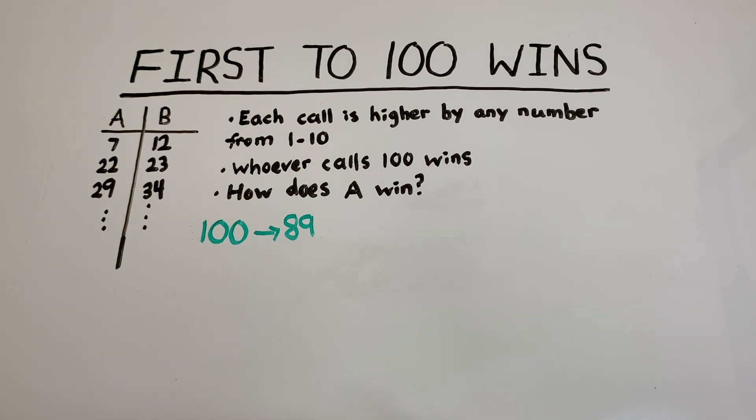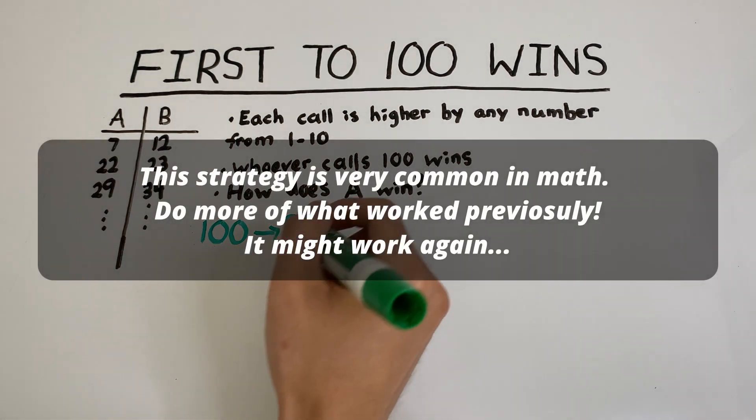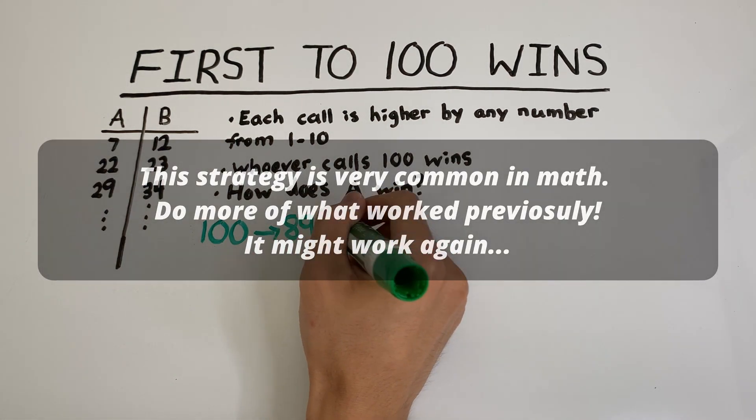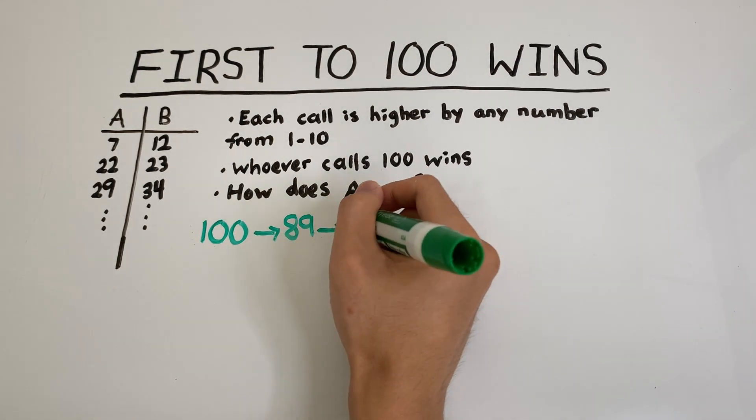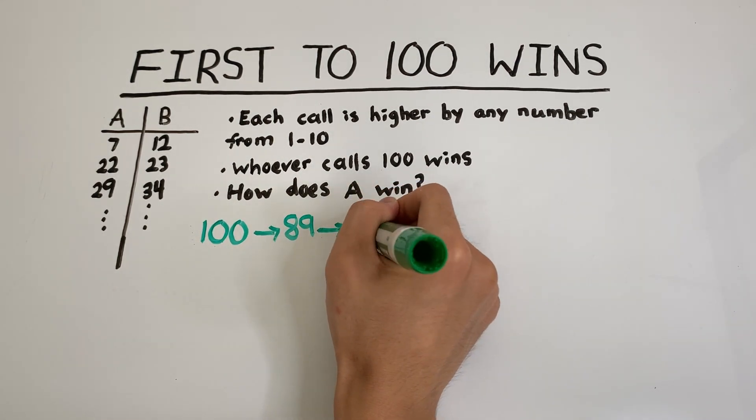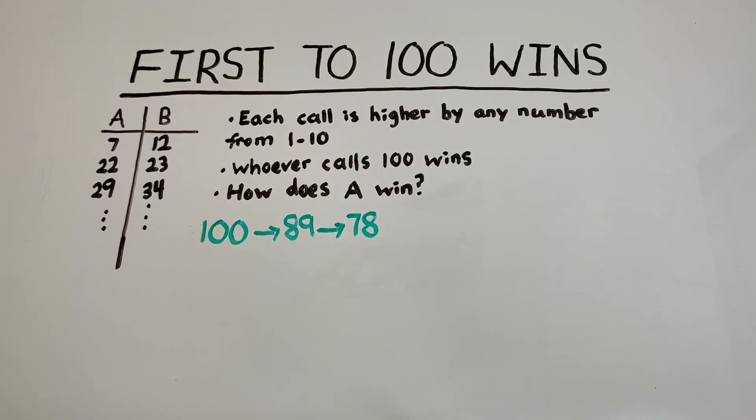So if we know A has to call 89, how does A call 89? Well, to get to 89, A can say the number 78. Because if A says 78, then B can say any number from 79 to at most the number 88. So if B does call the number 88, then A can say 89, and if B calls 99, then A can say 100.